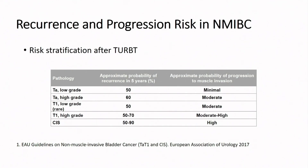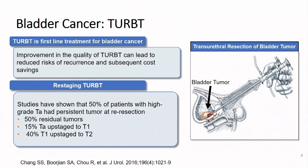There is a significant risk of recurrence and progression correlated with clinical factors including grade and stage of the tumor. What's not well documented is the risk of recurrence if tumors are not properly detected at the time of initial TUR, and that impacts patient outcomes. Improvement in the TUR can lead to reduced recurrences and cost savings. Studies have shown that at least half of patients with high-grade disease at repeat resection will have residual disease — including TA tumors upstaged to T1 and T1 tumors upstaged to T2.